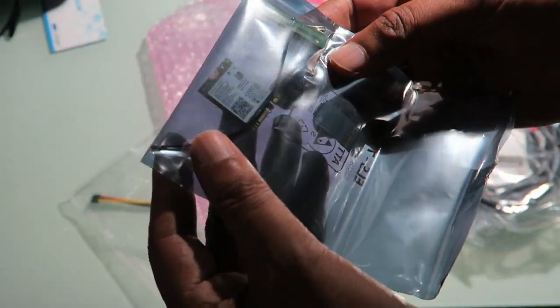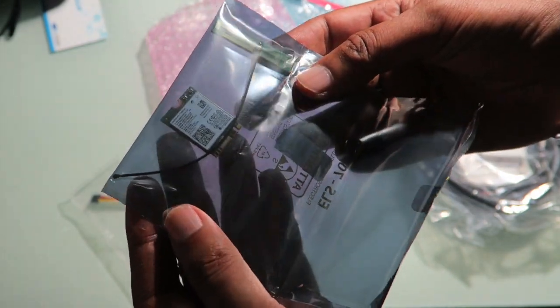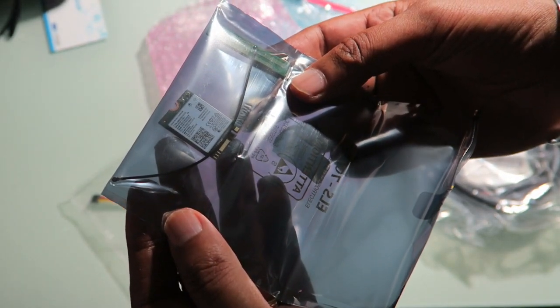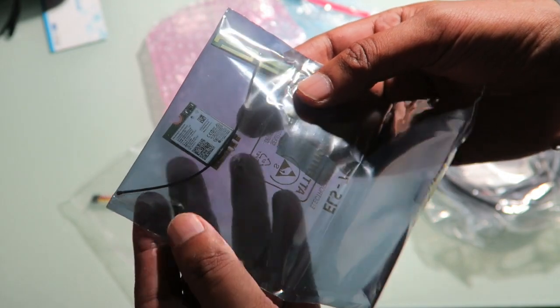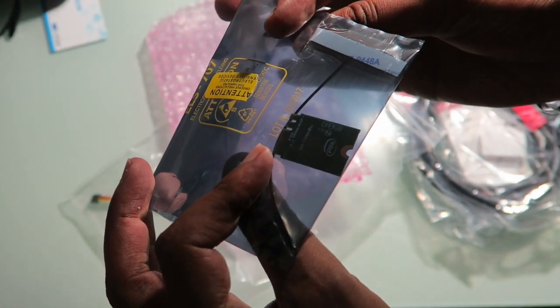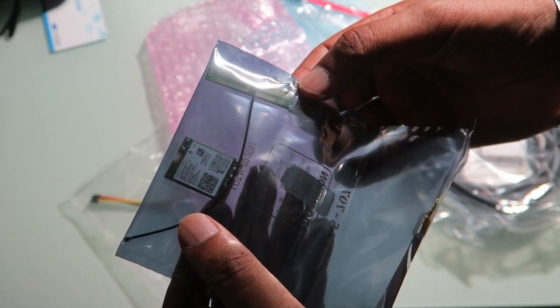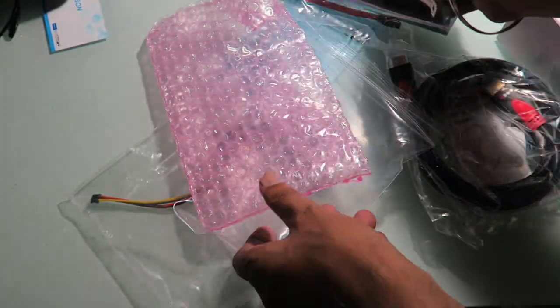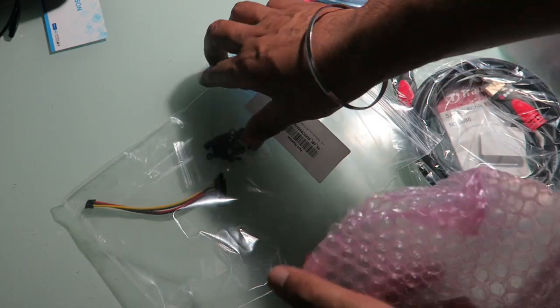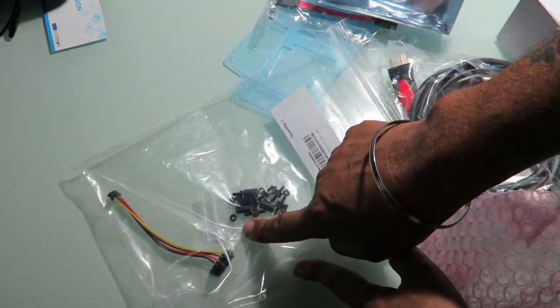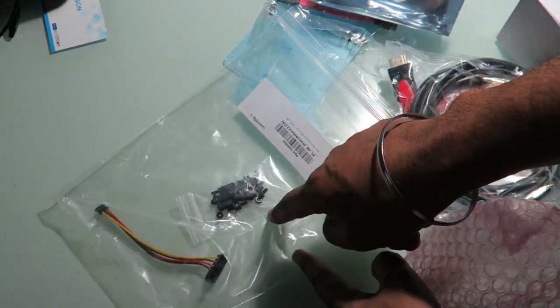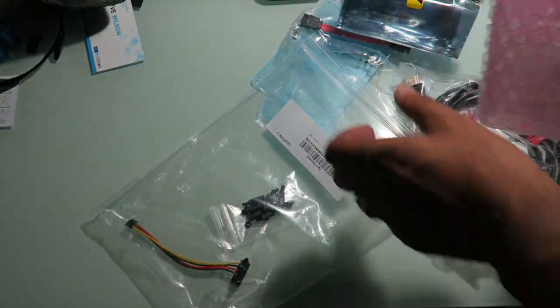Yeah, this is the Wi-Fi receiver unit. So this is your Wi-Fi module because you got your antenna there. We'll plug that in later. And of course you got all the screws and nuts and bolts for putting the case together.